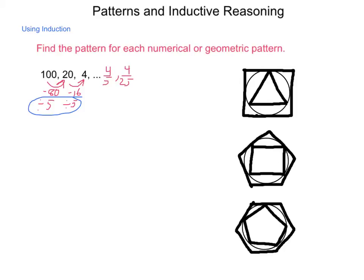Now, for the geometric figures, we have a triangle inside of a circle inside of a square. Then we have a square inside of a circle inside of a pentagon. A pentagon inside of a circle inside of a hexagon.